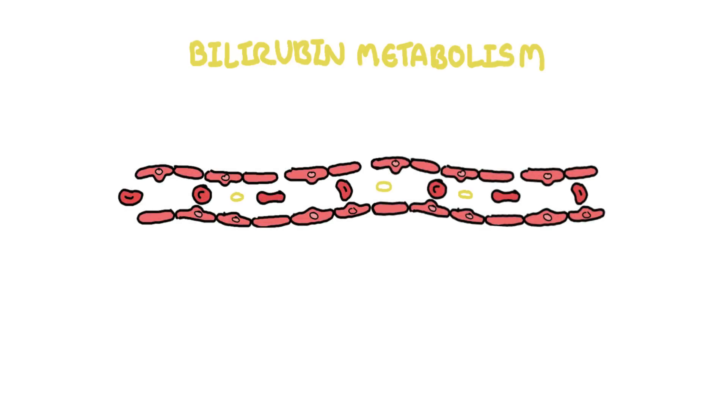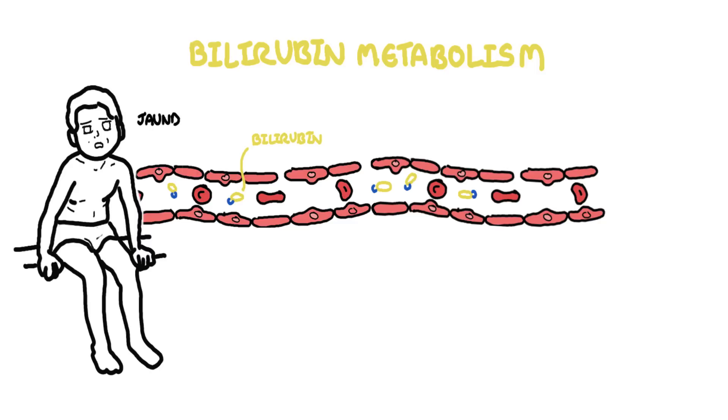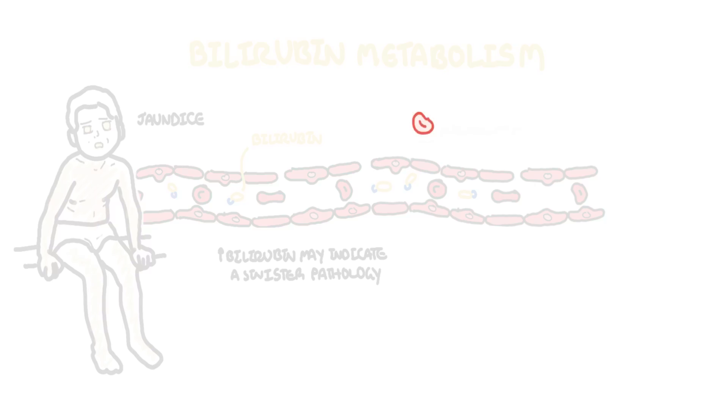In this video we're going to talk about bilirubin metabolism. Bilirubin metabolism is important because hyperbilirubinemia is a condition where you have high amounts of bilirubin that can lead to jaundice, which is yellowing of the skin and of the eyes. Bilirubin is formed by breakdown of heme present in hemoglobin.